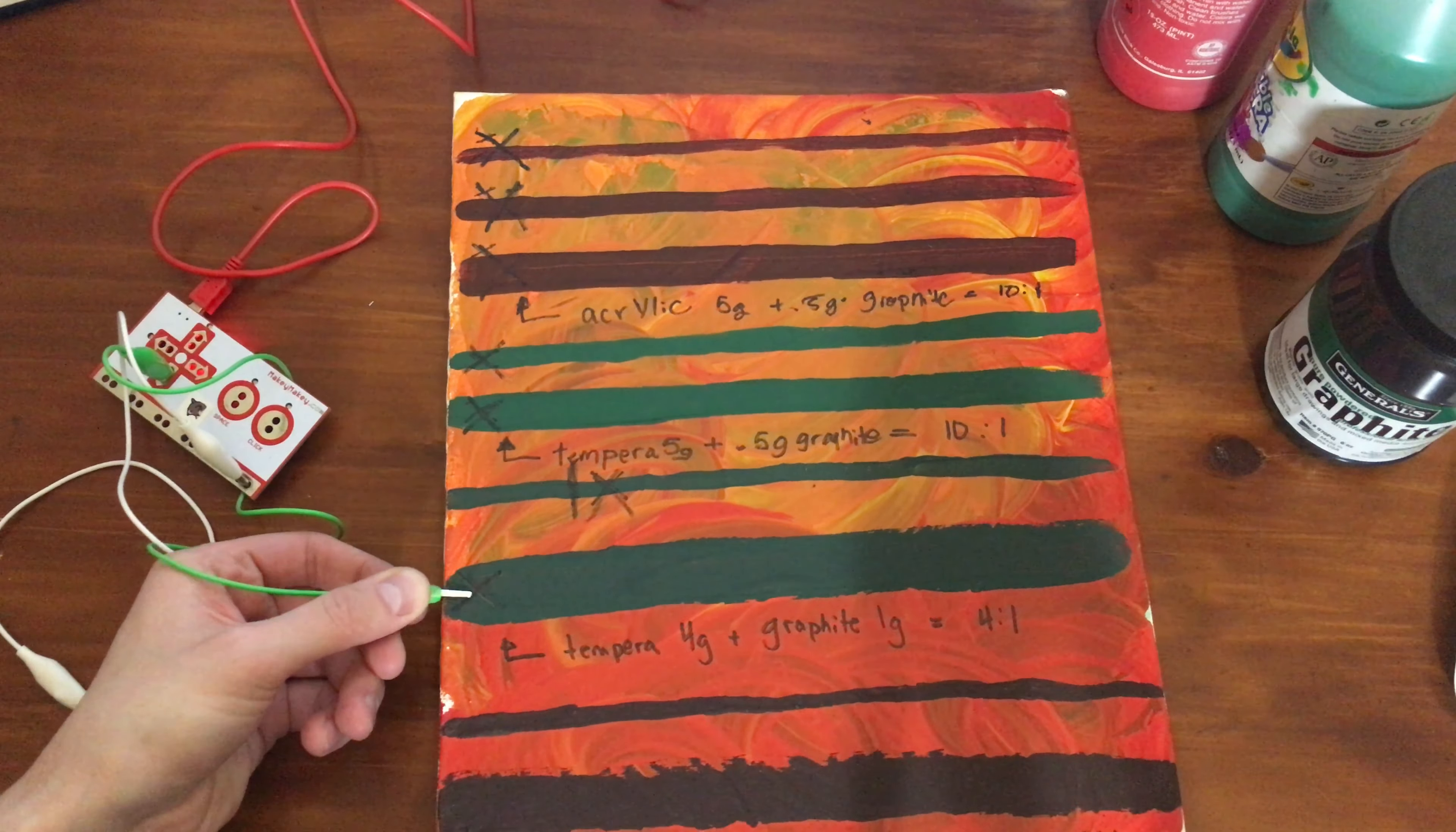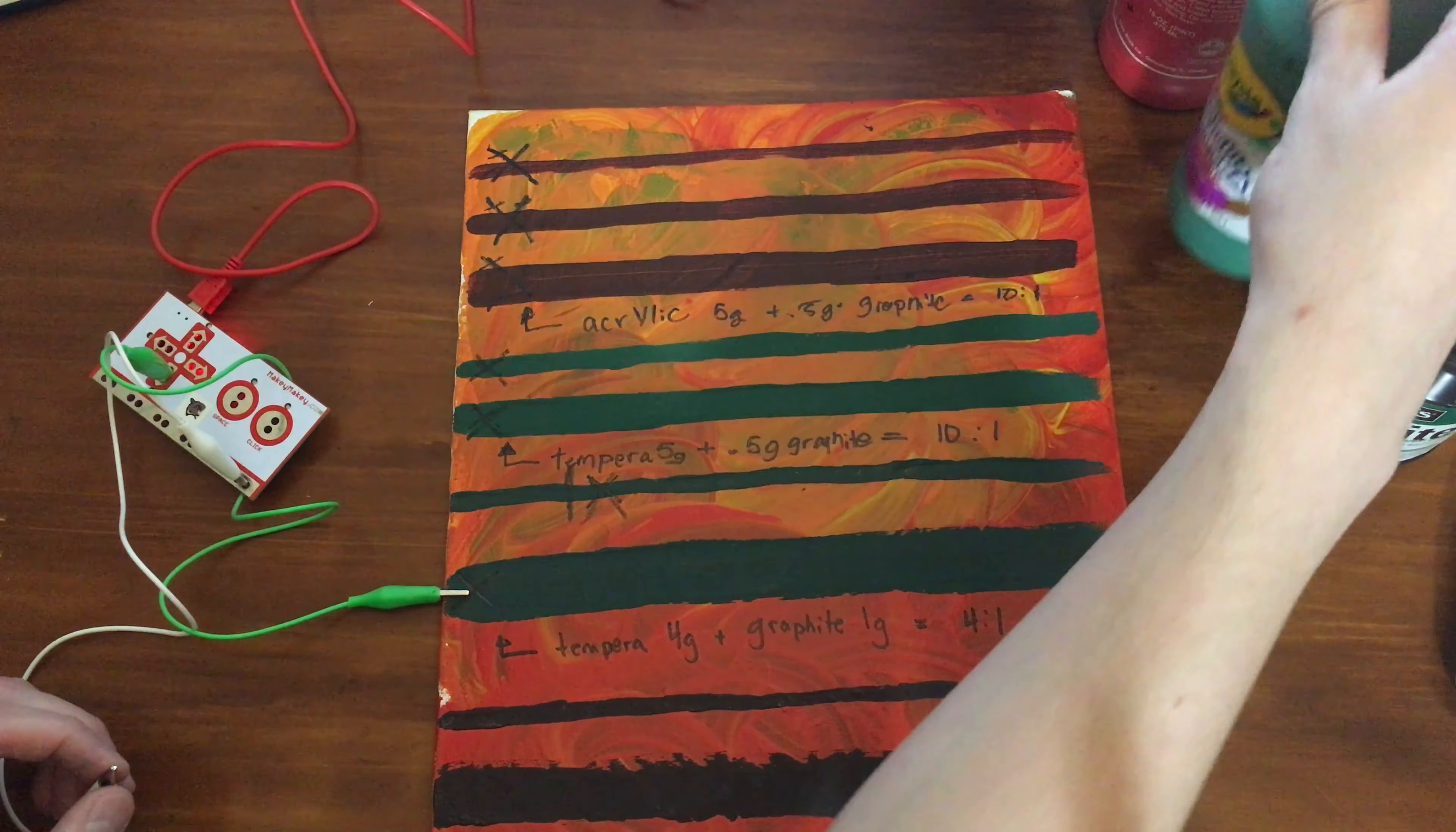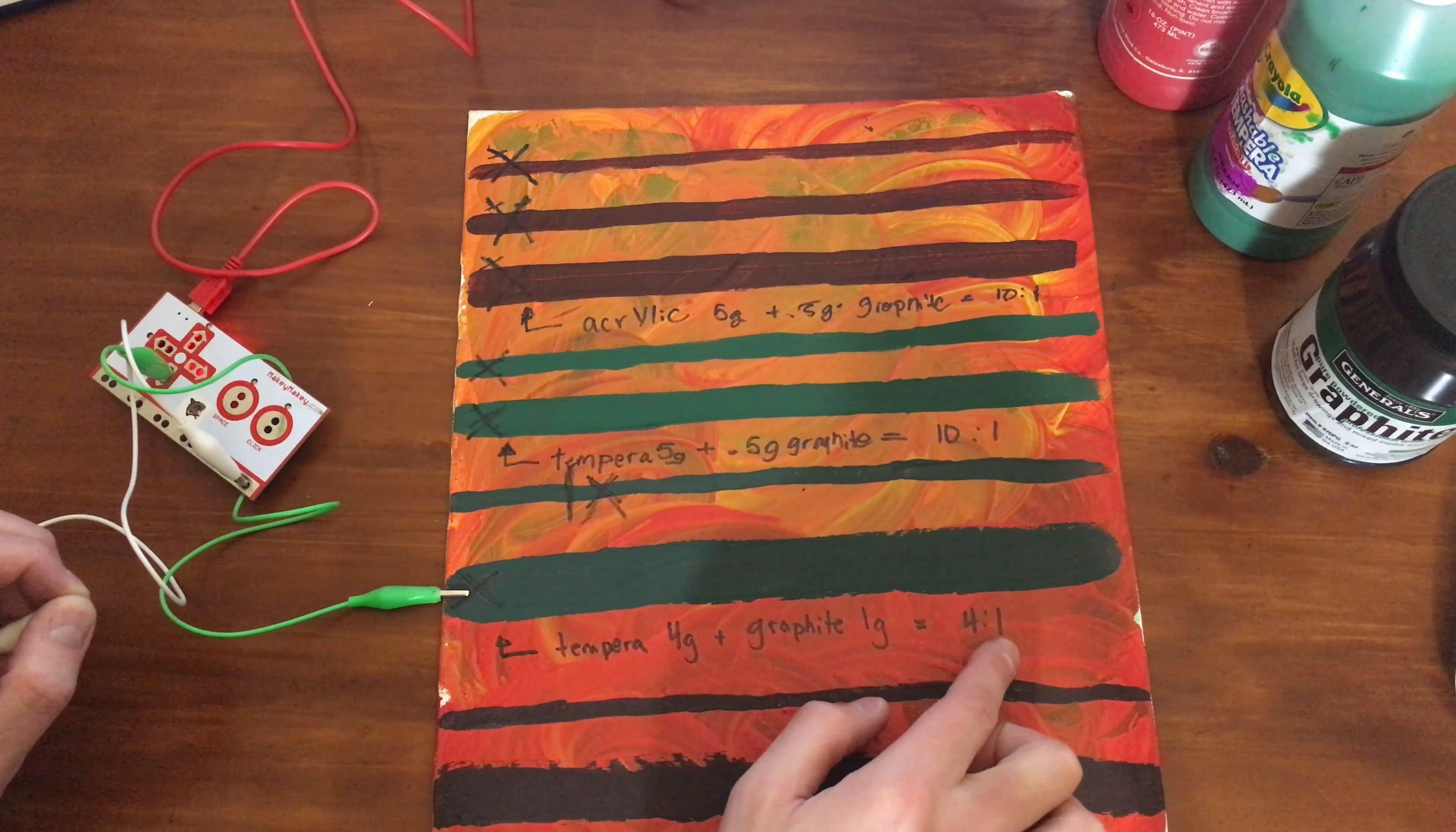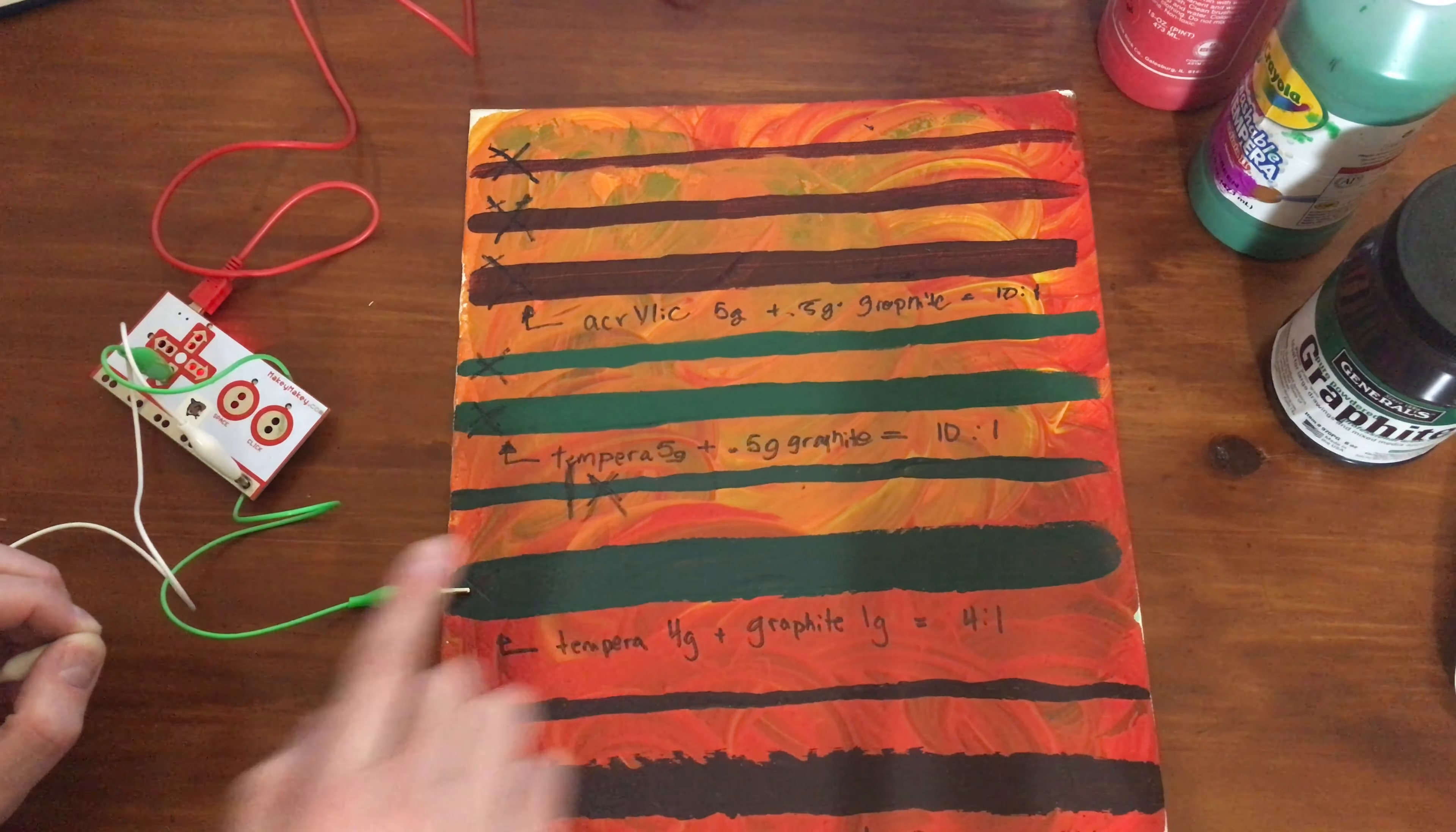The next one I tried was tempera, the water-based paint. The green, you can see it kept the green pretty well. When I used the tempera, I did four to one, so four tempera, one graphite, and you can see I have no reaction.